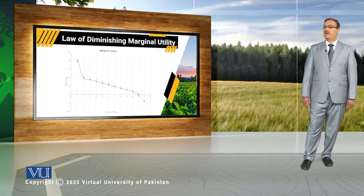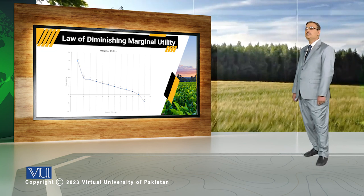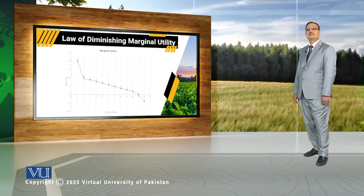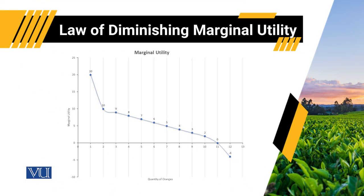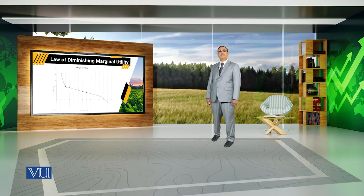The important thing is that each successive unit a consumer uses results in increase in total utility at a decreasing rate. This increase in total utility at a decreasing rate is called the Law of Diminishing Marginal Utility. As shown in the figure, the marginal utility against the first unit of orange is highest, while it becomes lowest when the consumer uses the 12th unit of orange — it even becomes negative. The point of saturation plays an important role in making marginal utility negative.